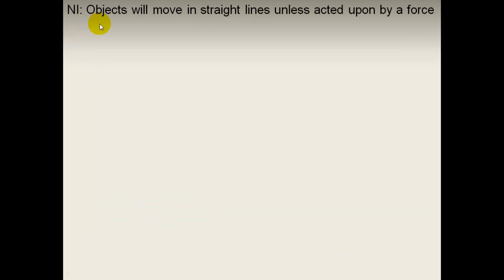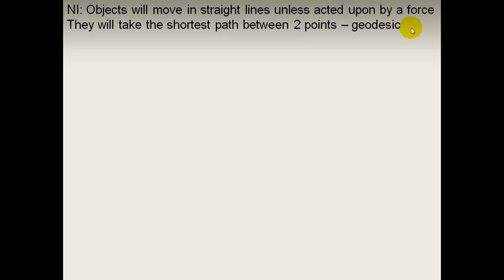Newton's first law states that objects move in straight lines unless acted upon by a force. The key question is: what is a straight line? To Newton, the universe was flat — Euclidean — so the path from one point to another was always a straight line as the shortest route. This path between two points is called a geodesic.